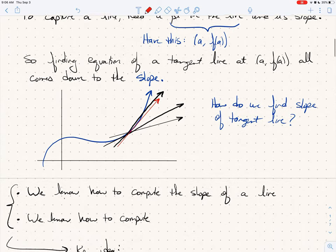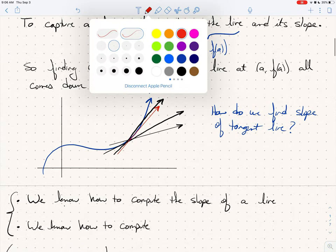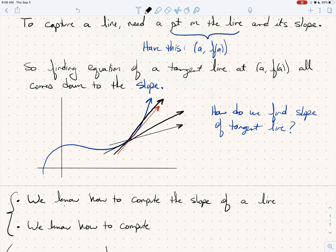So let's review some things that we know. We know how to compute the slope of a line which passes through two different points. The slope of a line between two points. That we can do. We've been doing that for a long time. And we also know how to compute at least some, maybe not all, but some limits. That's what we've spent the last chapter studying.